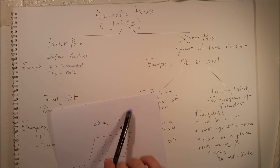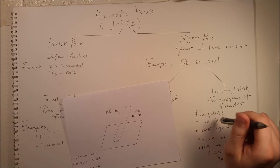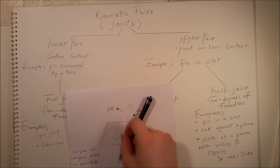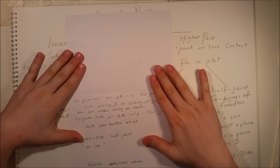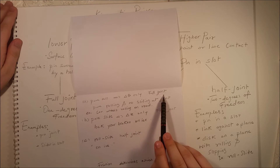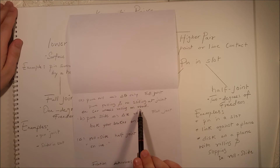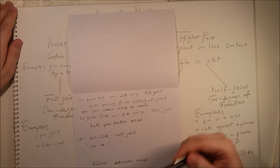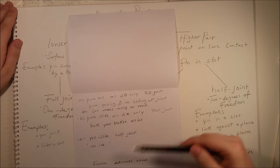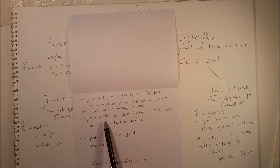Roll-slide is a half joint since it has two degrees of freedom — it can move along the x-axis and also rotate about its fixed point. Pure roll allows only rotation and is classified as a full joint, involving pure rolling and no sliding. A great example of this is car wheels rolling on the road — the wheels roll and do not slide.